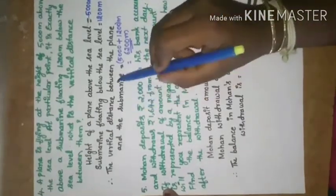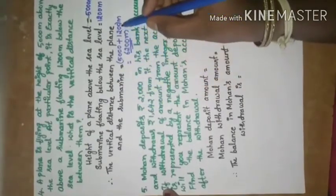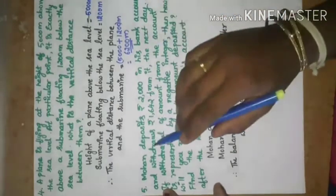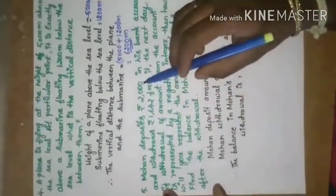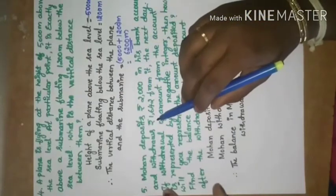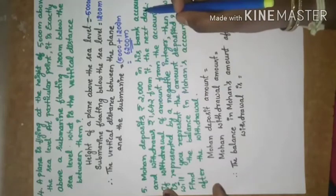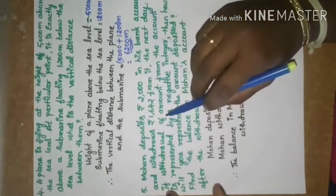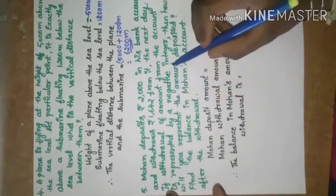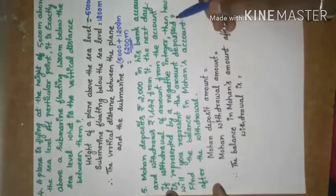Question 5: Mohan deposits rupees 2000 in his bank account and withdraws rupees 1642 from it the next day. If withdrawal of amount from the account is represented by a negative integer, then how will you represent the amount deposited? Find the balance in Mohan's account after the withdrawal. The deposit amount is represented by a positive integer.